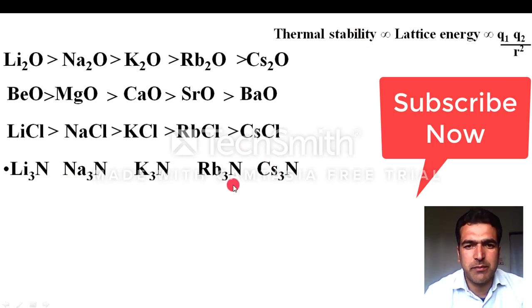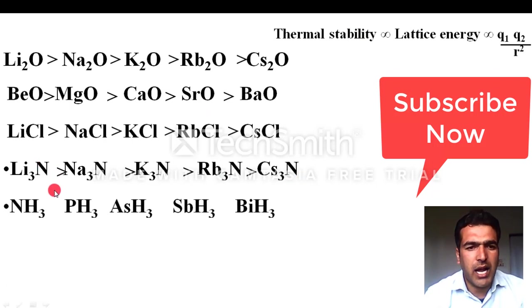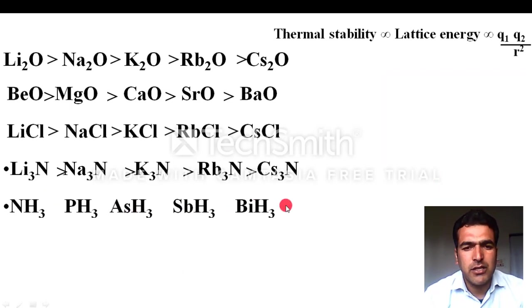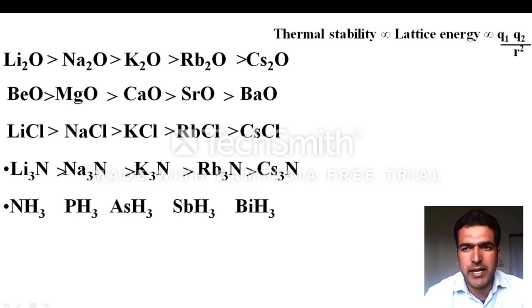Similarly, for the hydrides of the nitrogen family — ammonia, phosphine, arsine, stibine, and bismuthine — as you move from nitrogen to bismuth, the atomic radius goes on increasing. So the bond length r increases, which means the bond becomes weaker, and thermal stability decreases. The order is: NH3 > PH3 > AsH3 > SbH3 > BiH3.